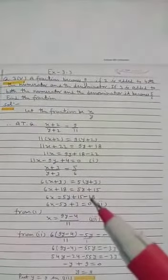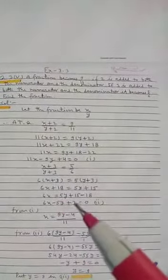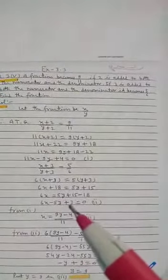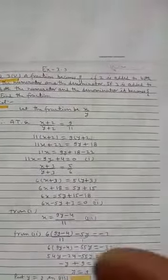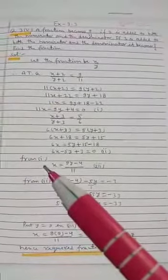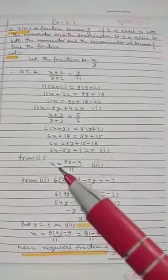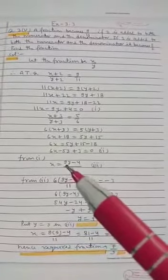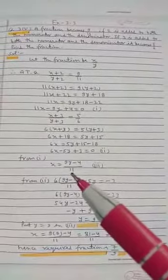Then 6x minus 5y plus 3 is equal to 0, which is equation 2. From equation 1, x is equal to 9y minus 4 upon 11.